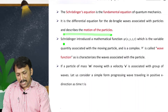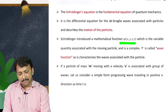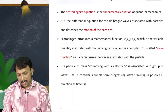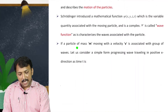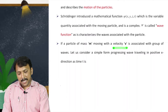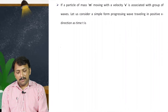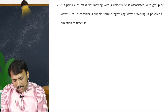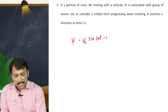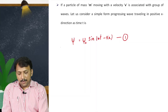To derive this equation, Schrödinger introduced a mathematical function called psi — psi(x, y, z, t) — a variable quantity which explains the behavior of a wave associated with a moving particle. Now consider a particle of mass m moving with velocity v in the positive x-direction. For that particle, the wave equation is psi equal to psi-naught times sine(omega·t minus k·x).